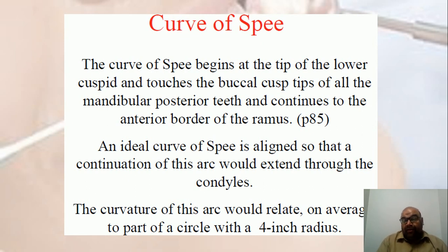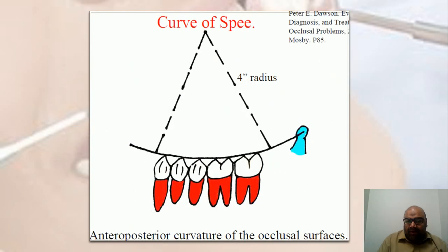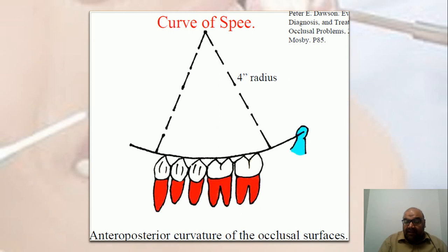According to Dawson's book, one of the most comprehensive definitions of the curve of Spee: the curve of Spee is aligned so that the continuation of the arc extends through the condyle. This curvature is averaged to the part of a circle with a four-inch radius. If extended posteriorly, it passes through the condyles and is part of a circle with a four-inch radius.